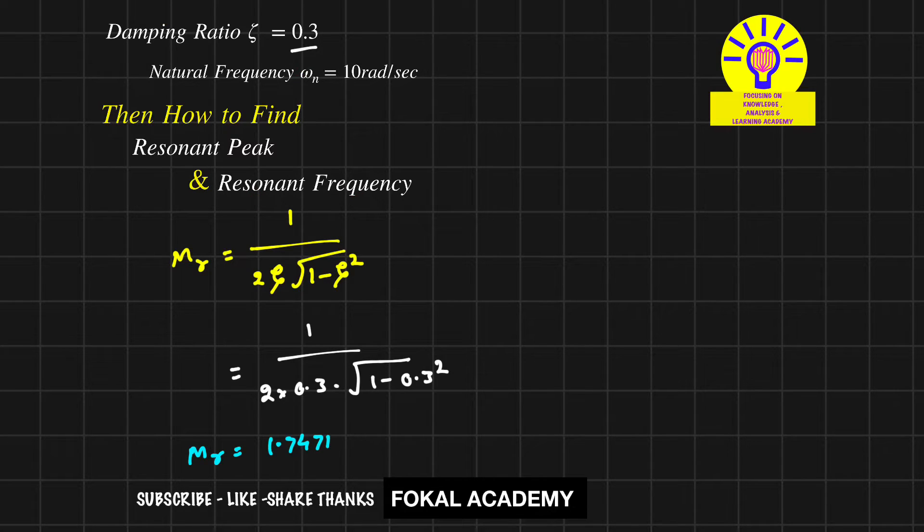For resonant frequency, we have a relation between damping ratio and omega n. So that is omega r equal to omega n into root of 1 minus 2 zeta square. So here omega r means resonant frequency and omega n is natural frequency and zeta is damping ratio.